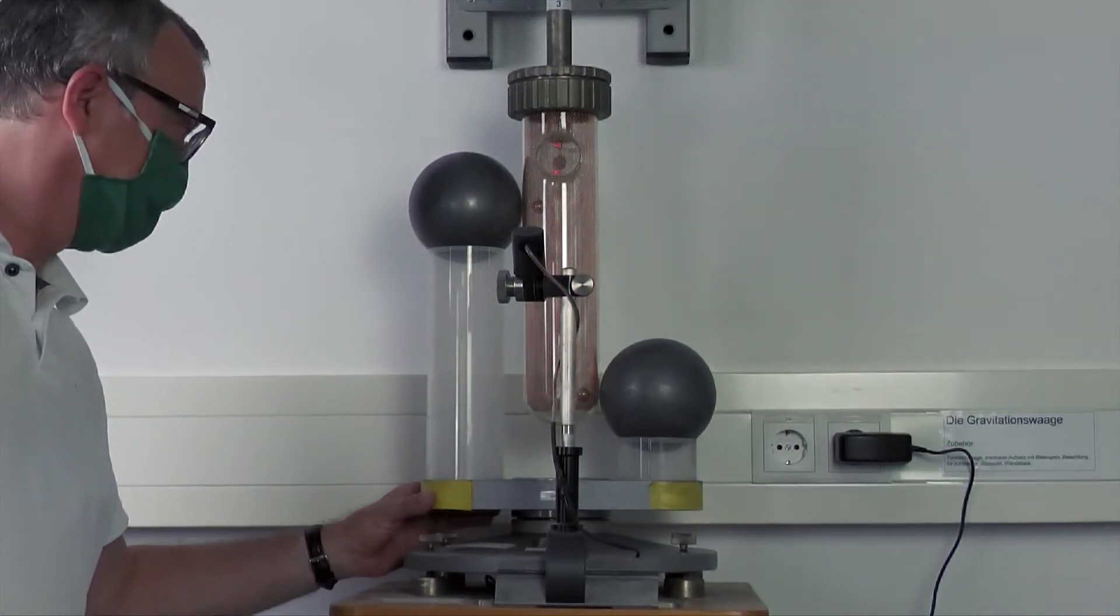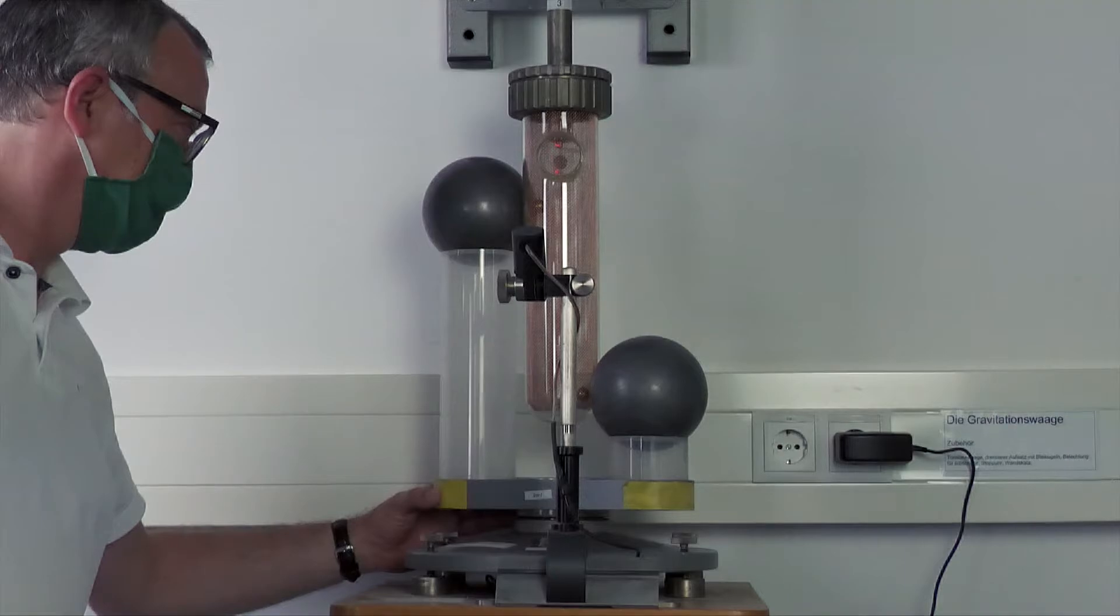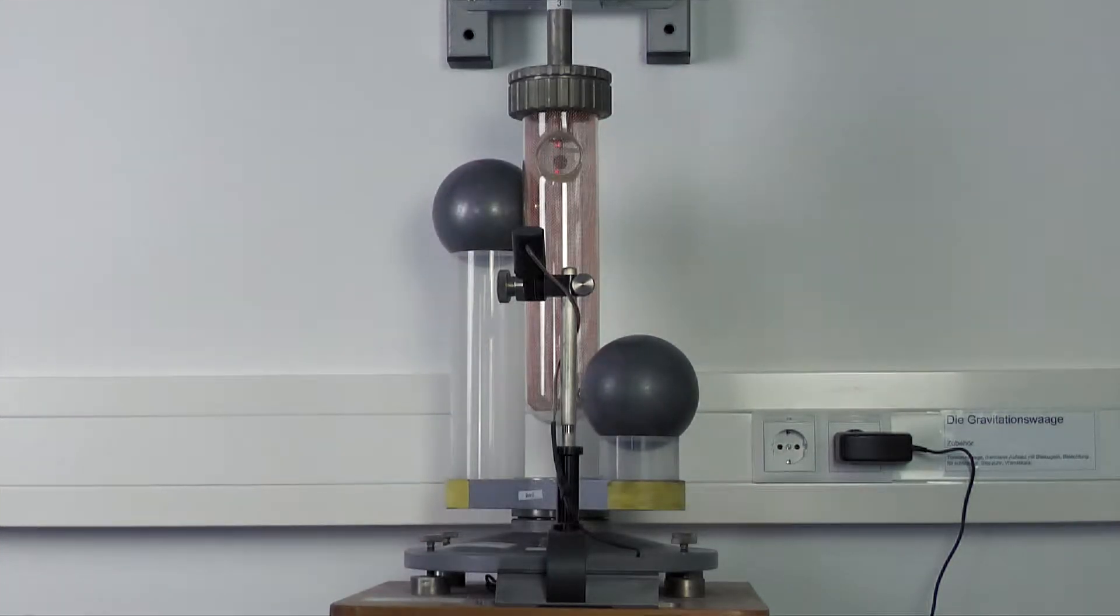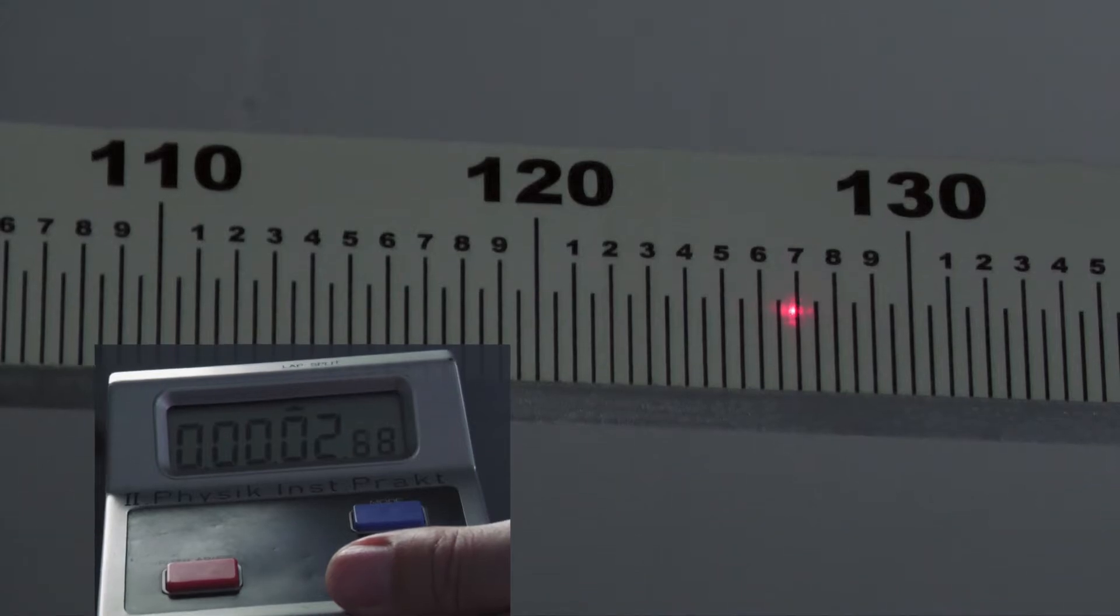Turn the outer spheres carefully and slowly in the nominal position. Measure the entire time sequence of the laser point deflection in slots of 15 seconds over 5 or more periods.